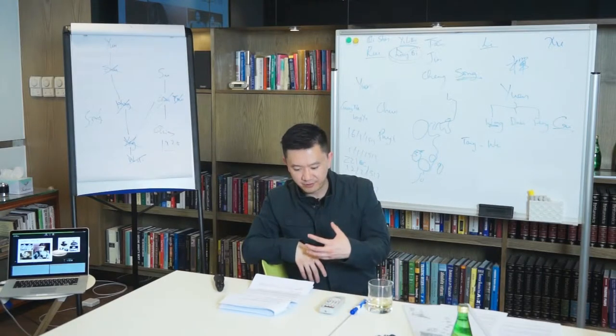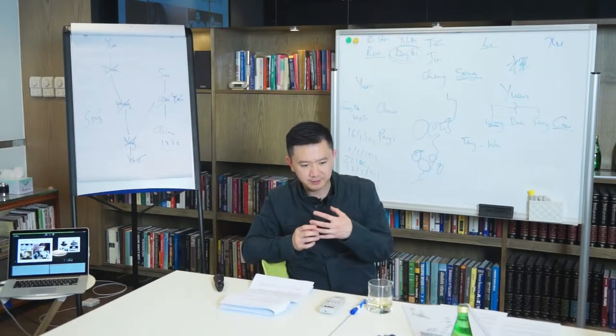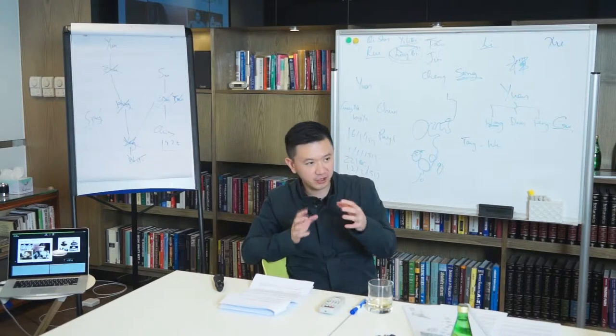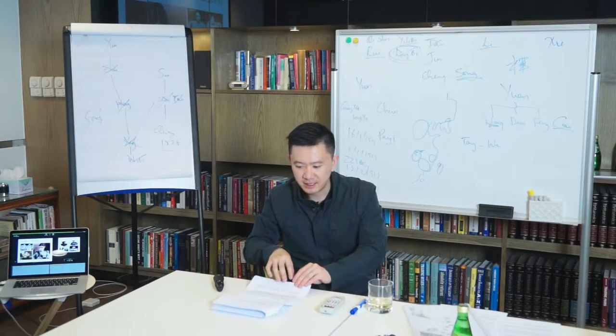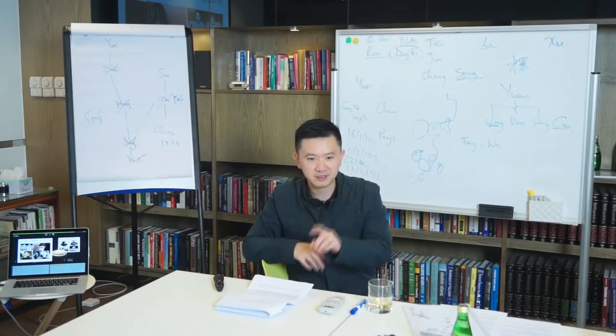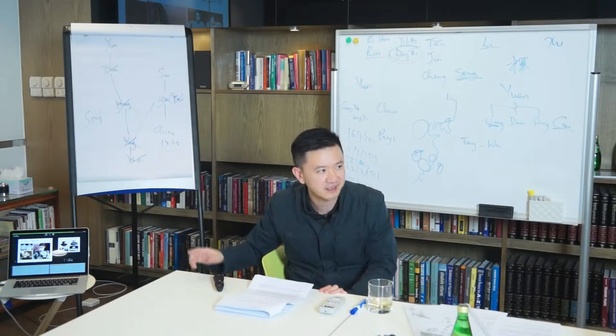And then at the same time, Yuan, with all of this, tried to consolidate power. And what's really interesting is at the same time, Sun was doing exactly the same thing.